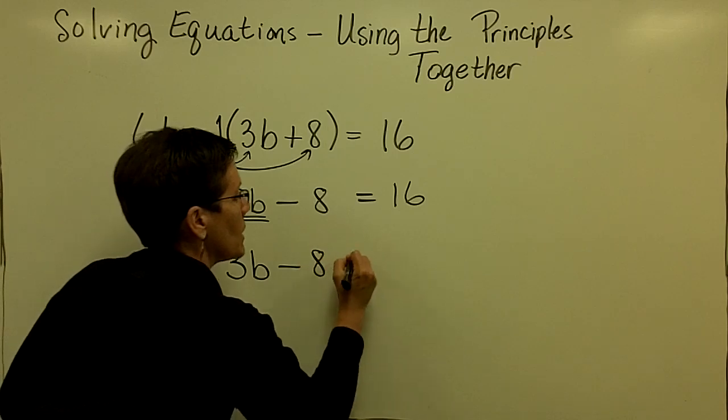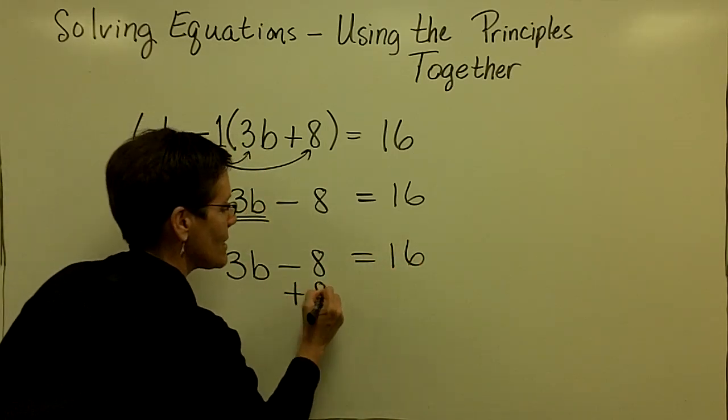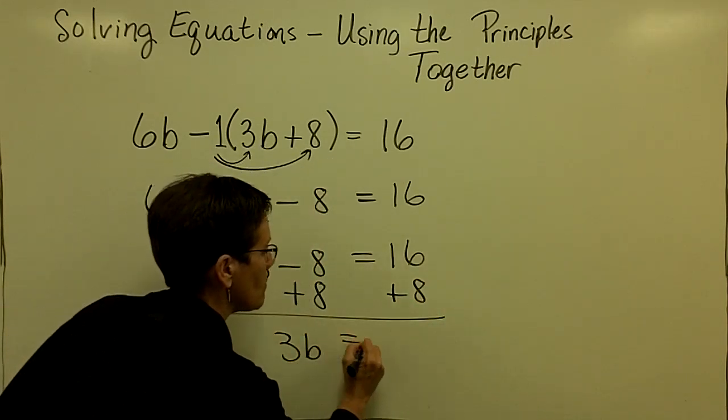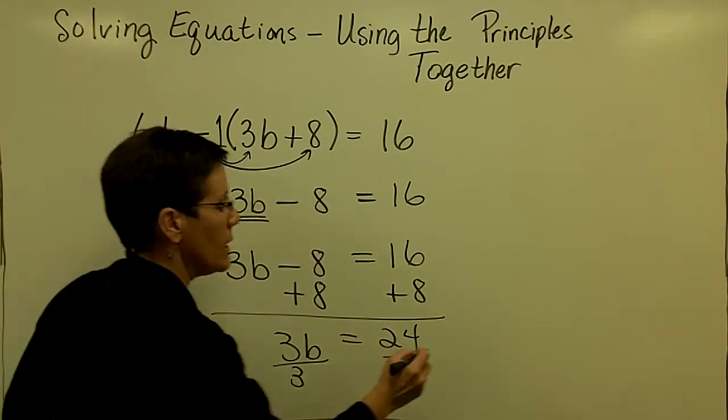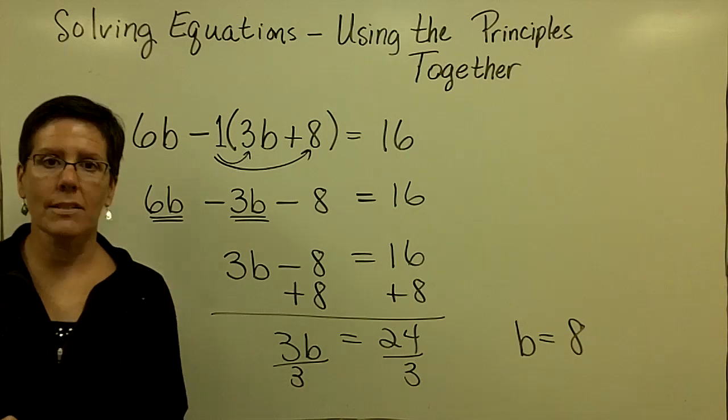And then I'm going to go ahead now and isolate the variable B by adding 8 to both sides of this equation. And then finally dividing both sides by 3 and finding out that B has a solution of a positive 8.